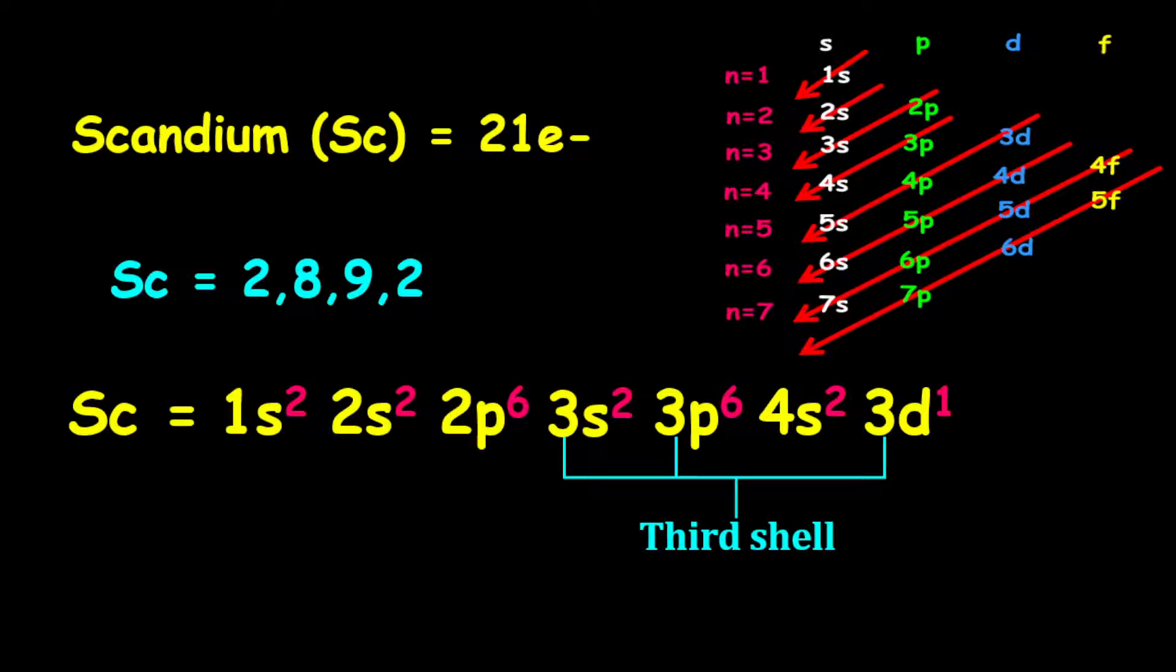The 4s orbital falls on the fourth shell, so therefore, there are 2 electrons on the fourth shell. Also remember that the third shell holds up to 18 electrons.